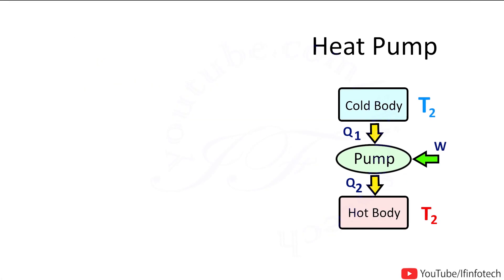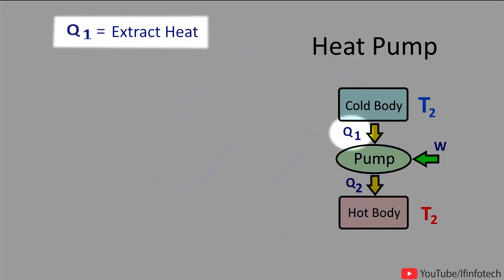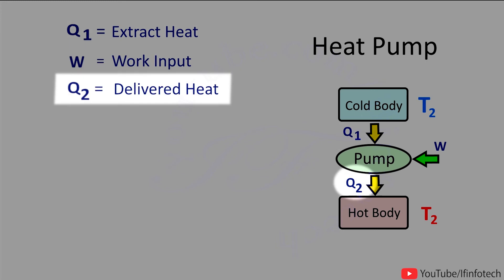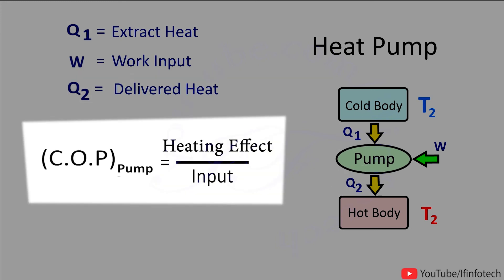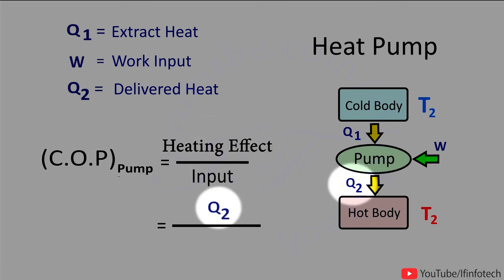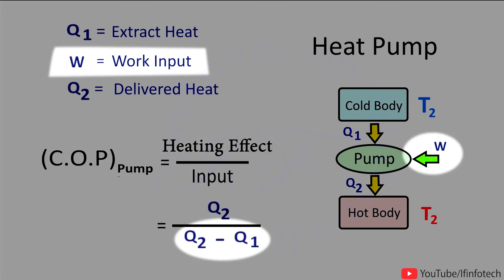A heat pump is a device which transfers heat from low temperature to high temperature. We take out heat Q1 from the cold body and deliver heat Q2 to the hot body. Therefore, COP of heat pump = Q2 / (Q2 - Q1).